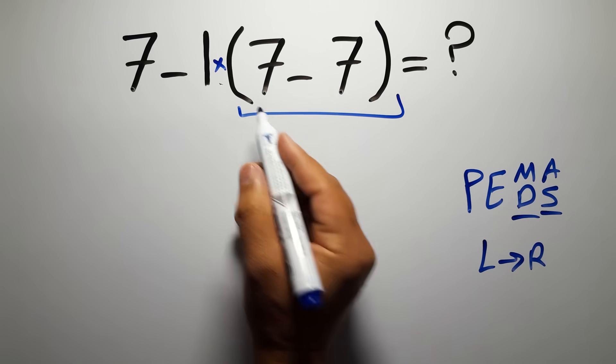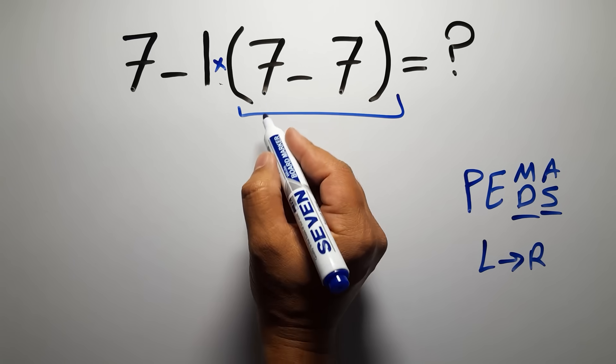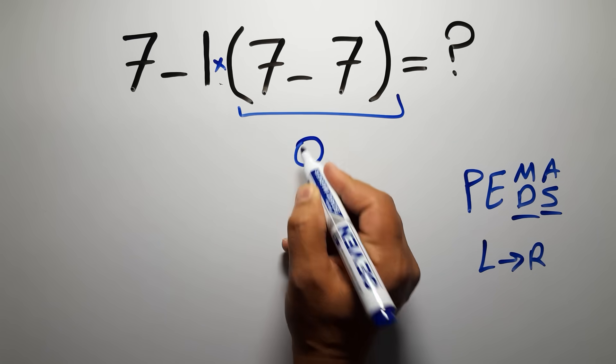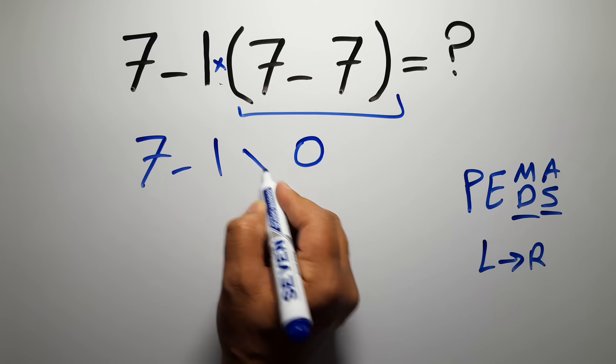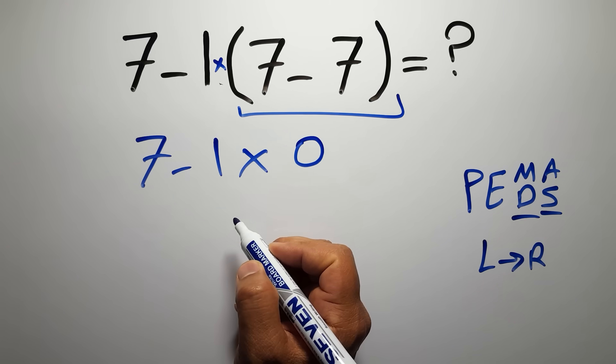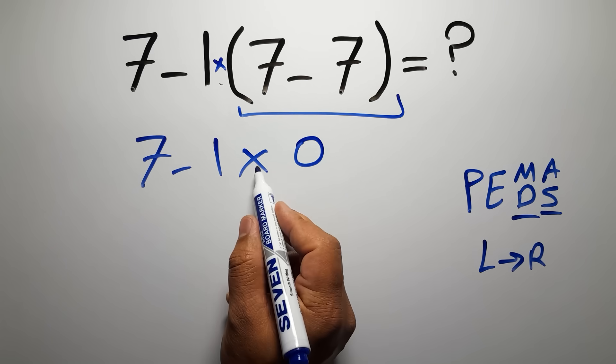So first we have to do this parentheses. Inside these parentheses we have 7 minus 7 which equals 0. So 7 minus 1 times 0. Now we have one subtraction and one multiplication.